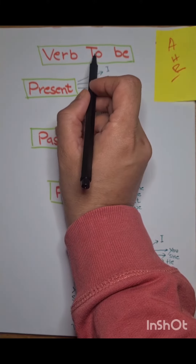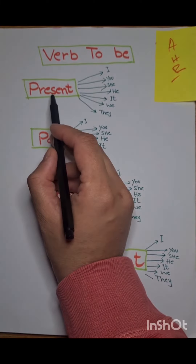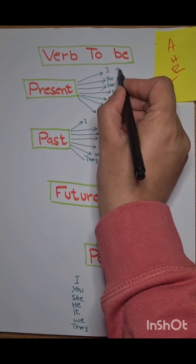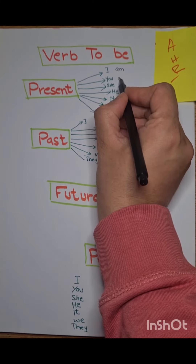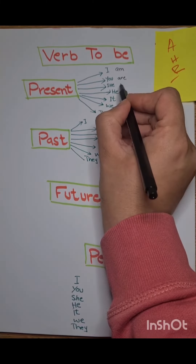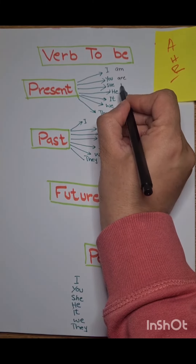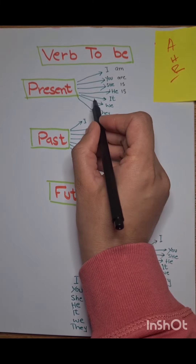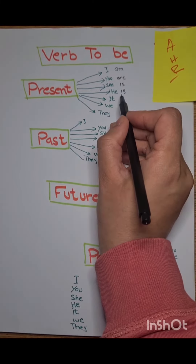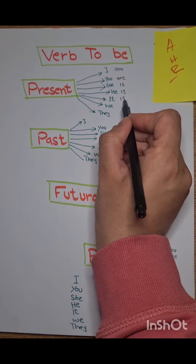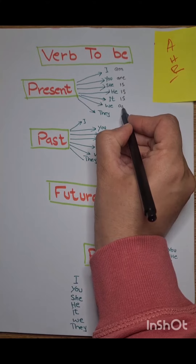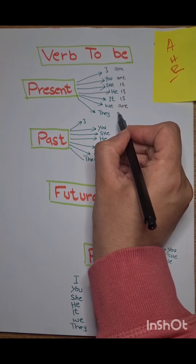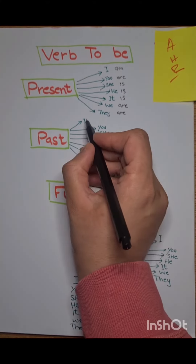Verb to be in present: I am, you are, she is, he is, it is, we are, they are.